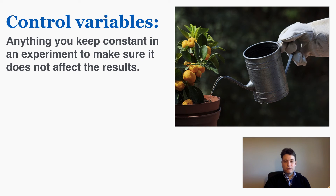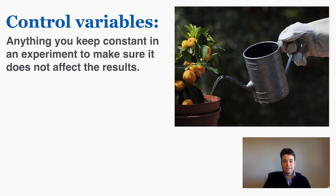In the watering plants experiment, one thing you'll want to keep the same is the amount of sunlight that each plant is getting. If you keep one plant in the dark and the other plants in the sun, you wouldn't know whether it was the water or the sunlight affecting the height. Another possible control variable could be the dirt that the plant is growing in — if you give some plants sand to grow in they'll probably die quickly because they don't have nutrients. An obvious control variable would also be that you should use the same type of plant, because different types of plants grow at different speeds.